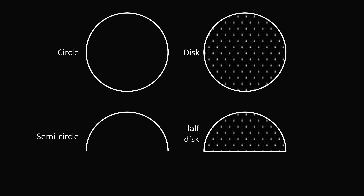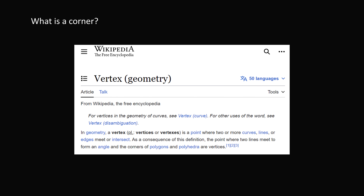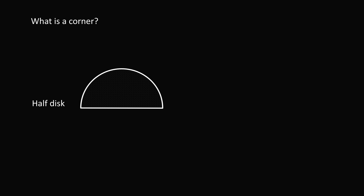We now state the question: how many corners are there in a half disk? But what is a corner? Here is the definition from Wikipedia for vertex in geometry: a vertex is a point where two or more curves, lines, or edges meet or intersect. As a consequence, the point where two lines meet to form an angle, and the corners of polygons and polyhedra, are vertices. In the half disk, we have a straight edge and a curved edge. If you take a corner to be only where two straight edges meet, it is right to say there are zero corners to a half disk. This is a justifiable model.